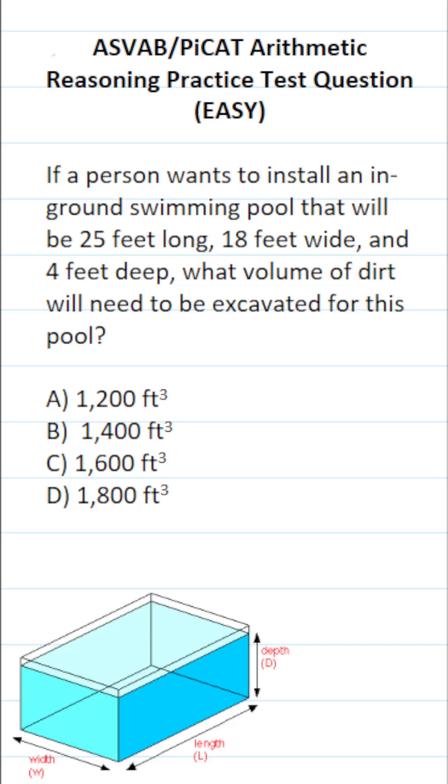So we're going to be excavating something that's in the shape of a rectangular prism. And since you're not permitted to use a reference sheet or a calculator on the ASVAB, you have to know this formula. The volume of a rectangular prism is simply length times width times height, and thankfully we're given all these values.